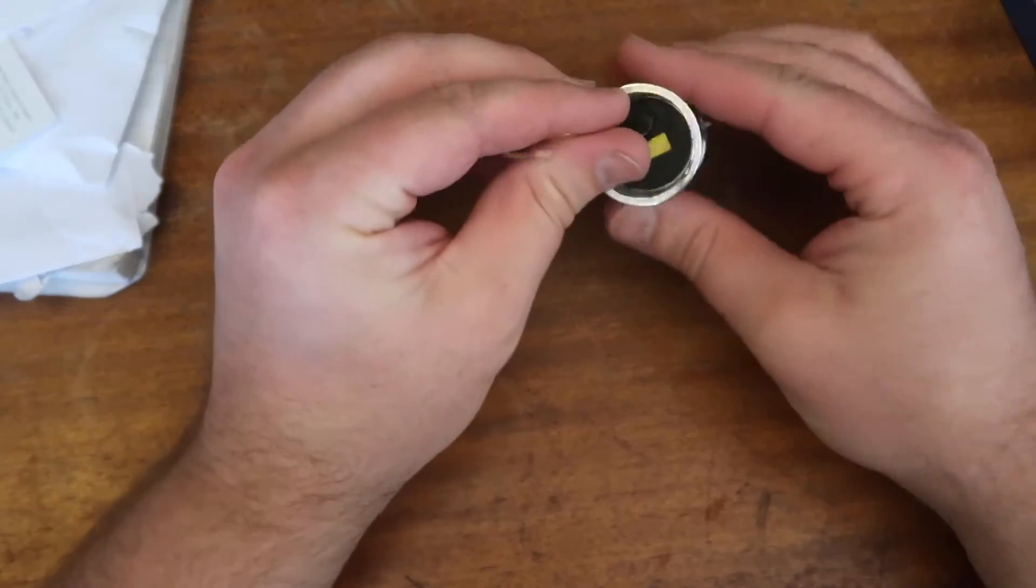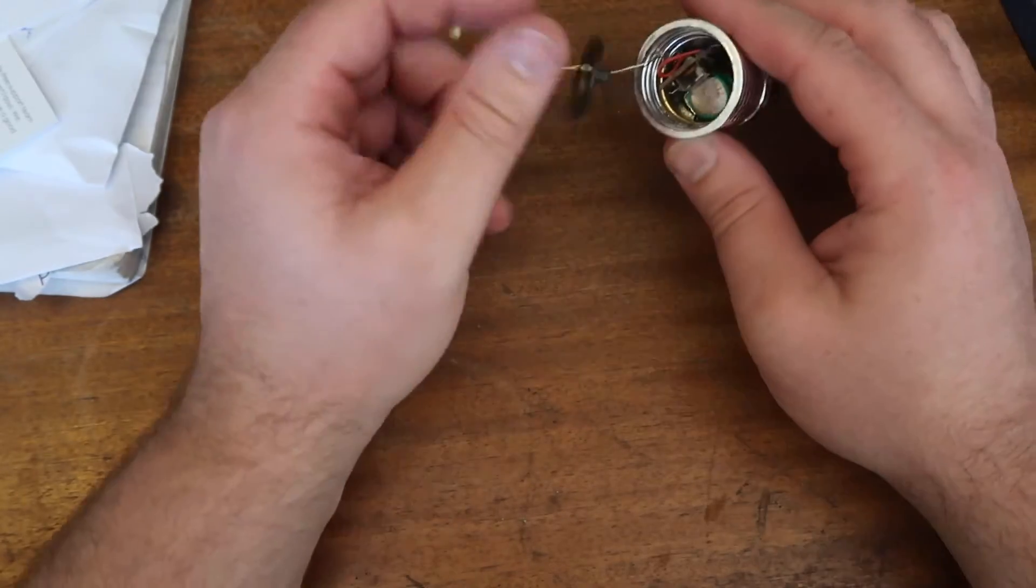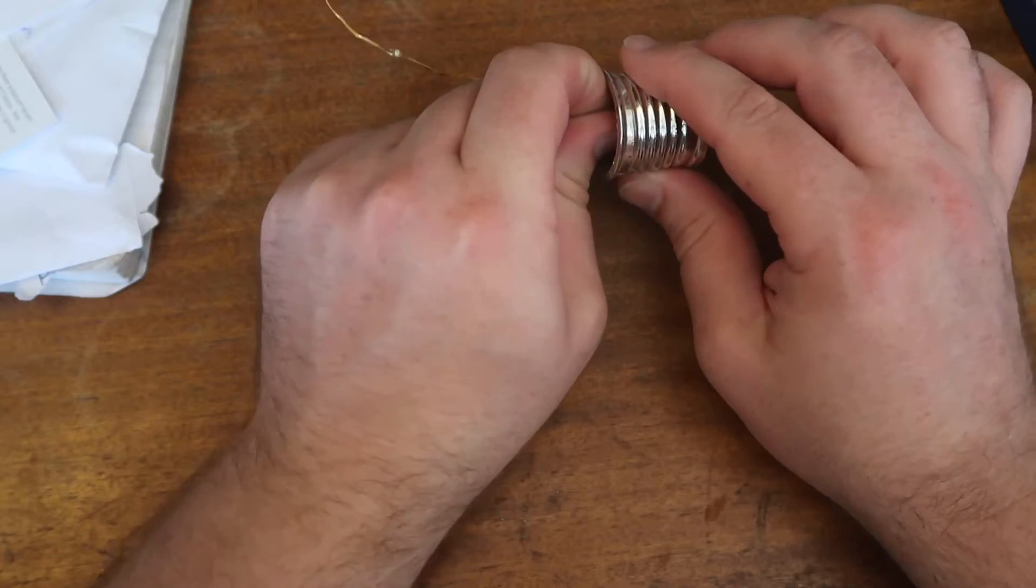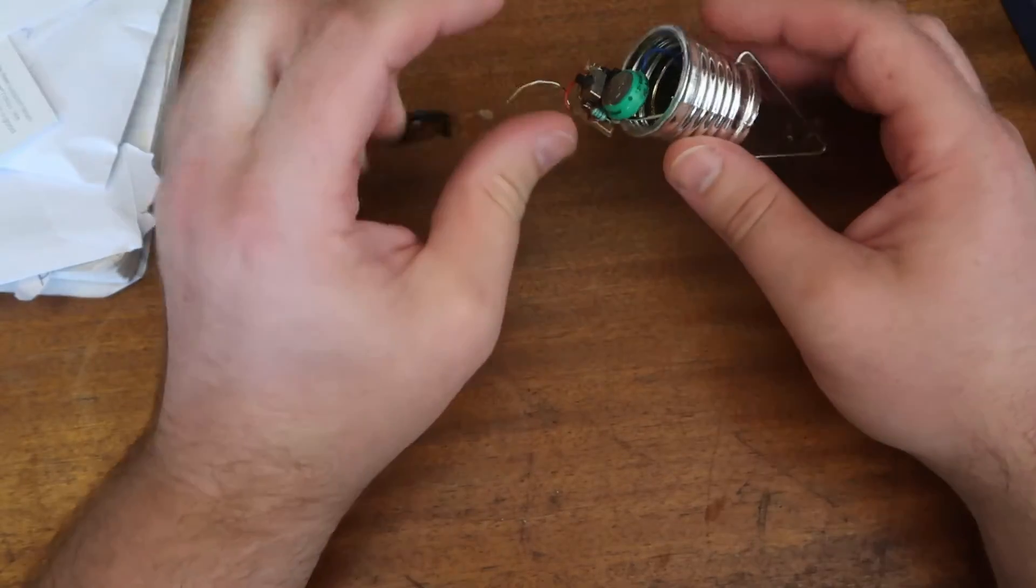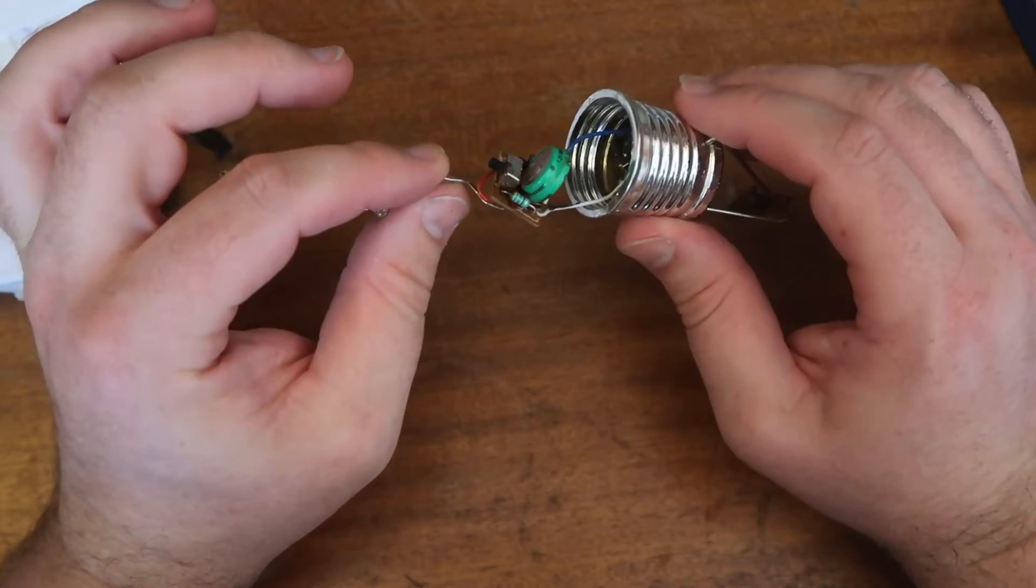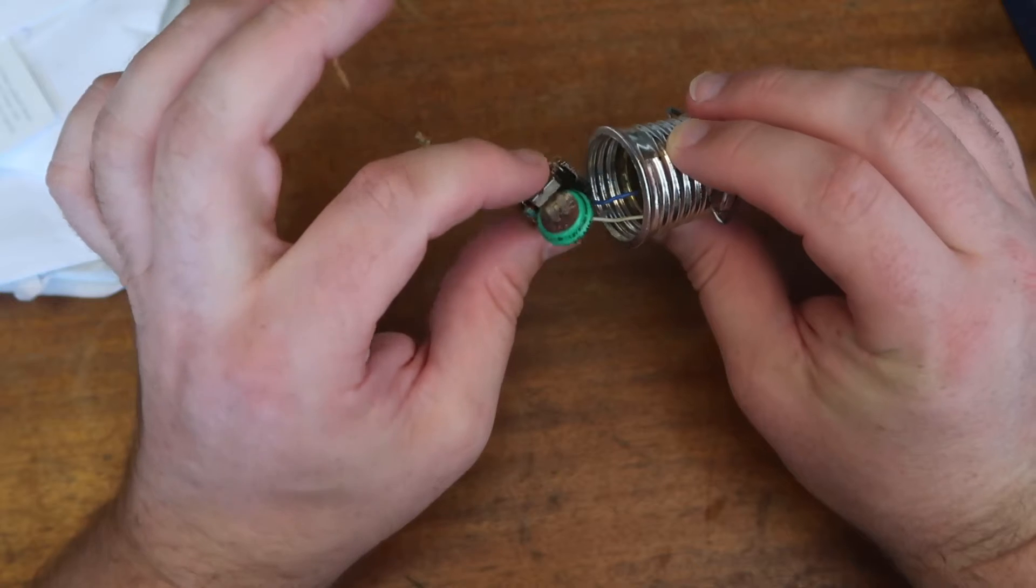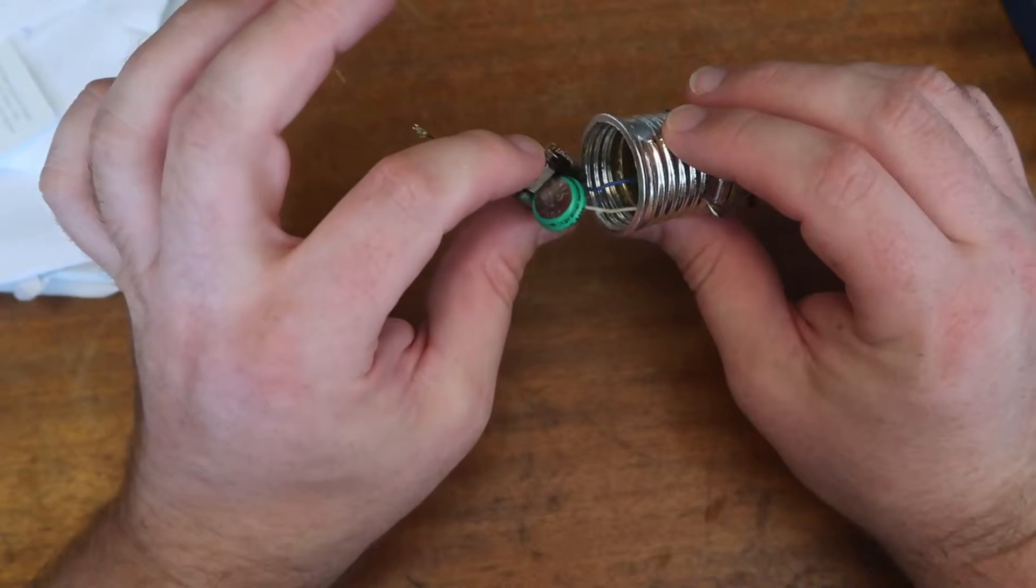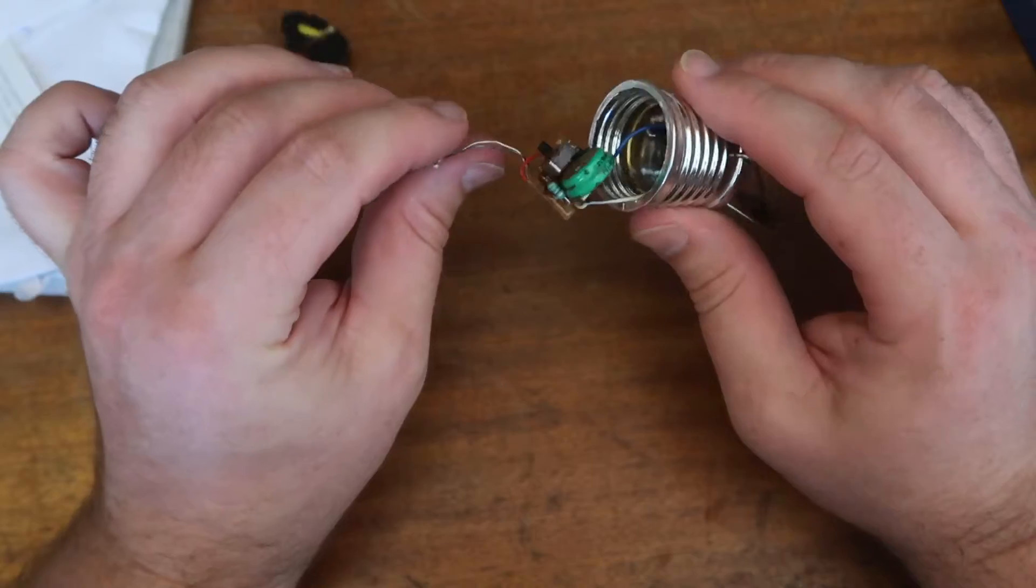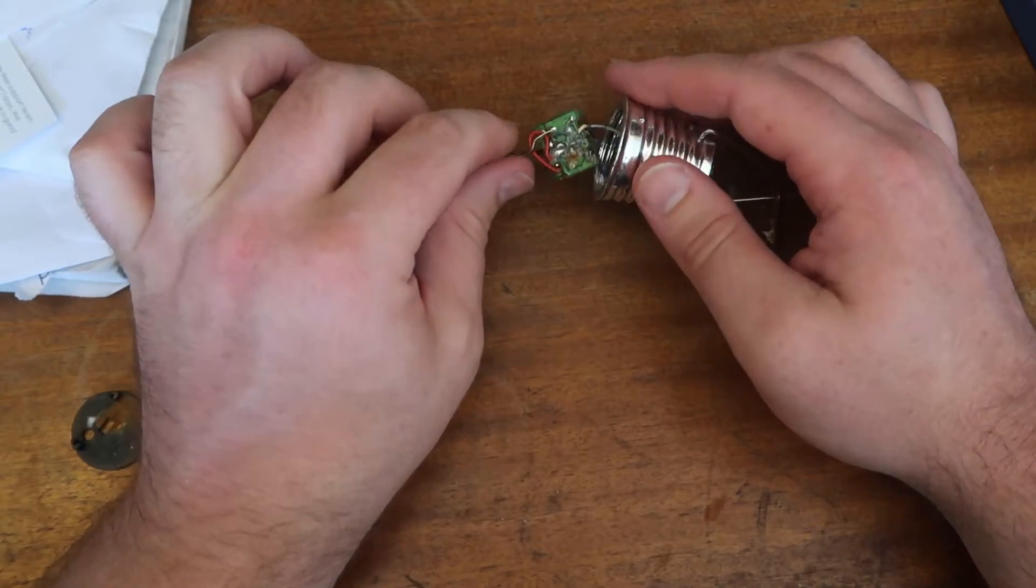So having had an explore and pulling the bottom off, I have discovered the problem with it. All the electronics are jammed in the base there. The problem is that the switch contacts have gone rusty, so it's not actually switching on anymore.